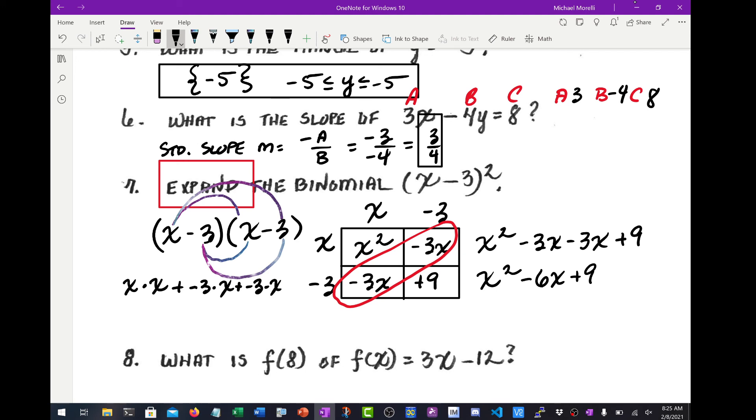And now you just do the same thing. X times X plus negative 3 times X plus negative 3 times X plus, and now I'm going to run out of space, but it's negative 3 times negative 3. So second row, we just come, X times X is X squared minus 3X minus 3X plus 9. Same thing, X squared minus 6X plus 9. Either way, you get the answer. I don't care, it's fine.